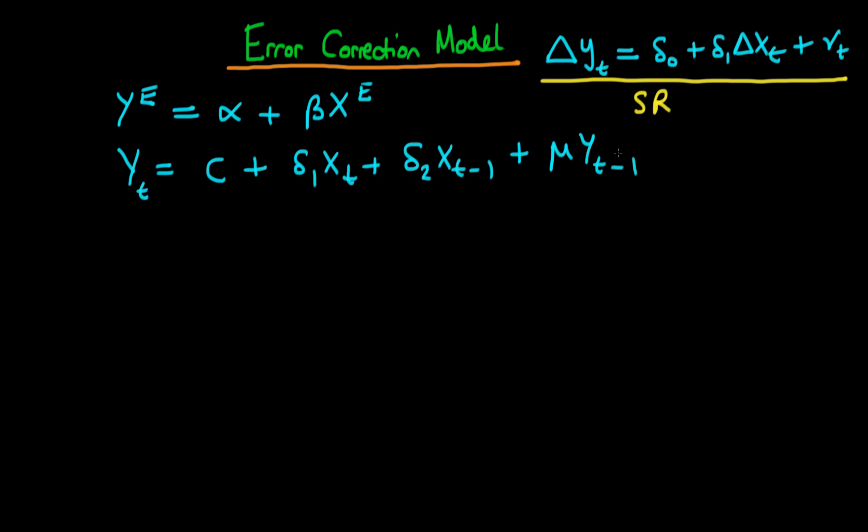Again this could represent some sort of time it takes for y to adjust and the mu here might represent some degree of inertia. And then finally I'm just including an error term vt.